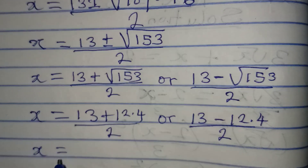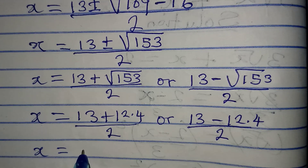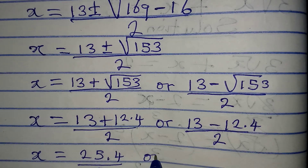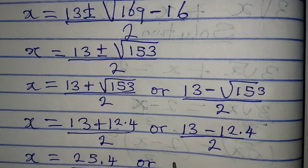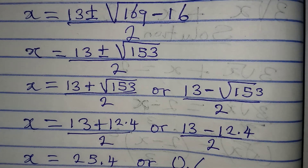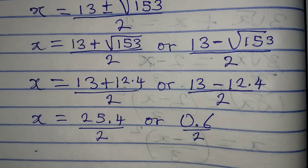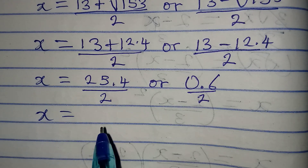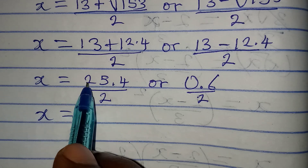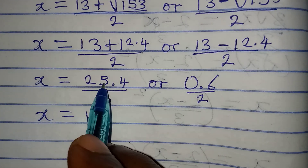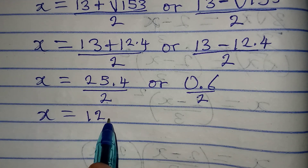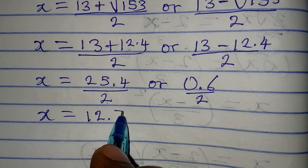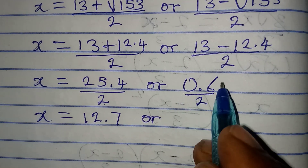Calculating: 13 + 12.4 = 25.4, divided by 2 gives 12.7. And 13 - 12.4 = 0.6, divided by 2 gives 0.3. Therefore x = 12.7 or x = 0.3.